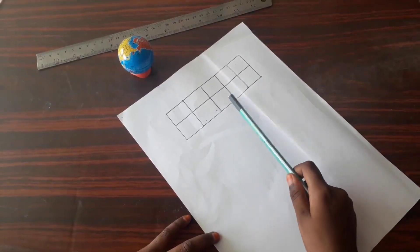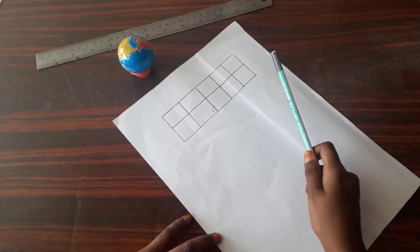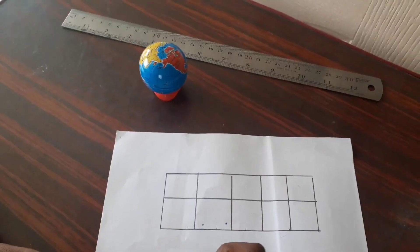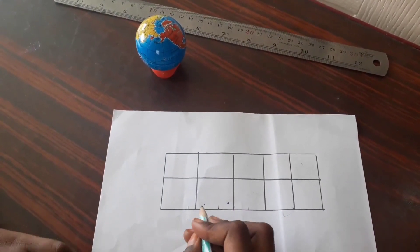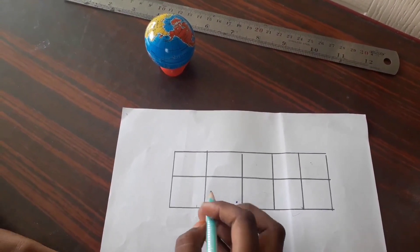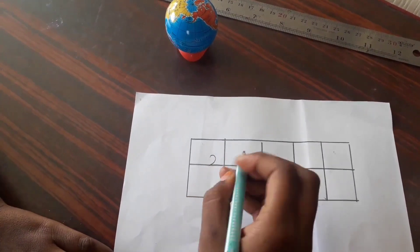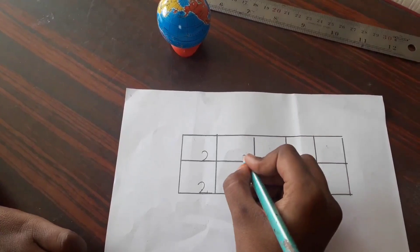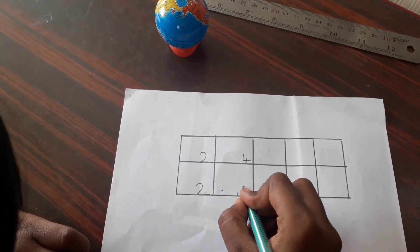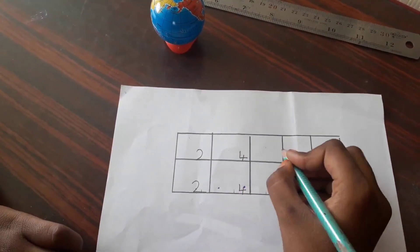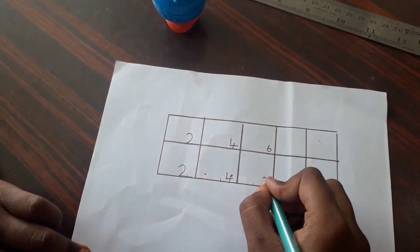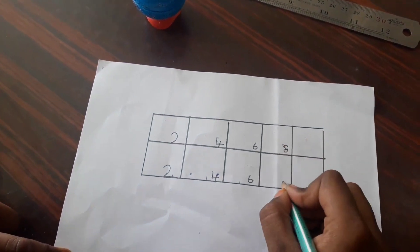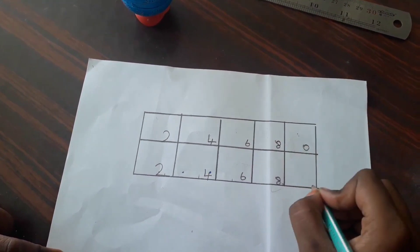So let's fill the first box with number 2, 2, and here 4, 4, 6, 6, 8, 8, 0 and 0.